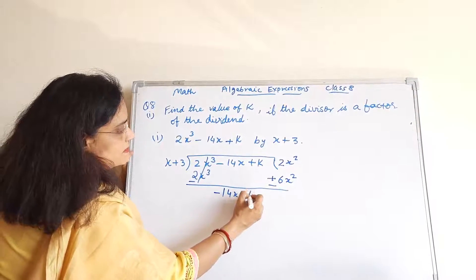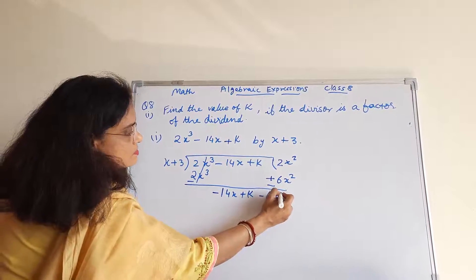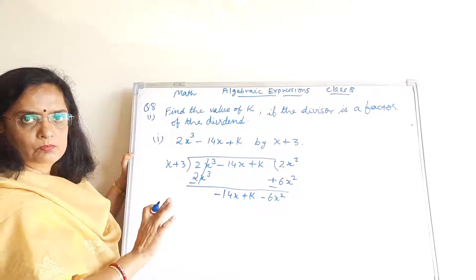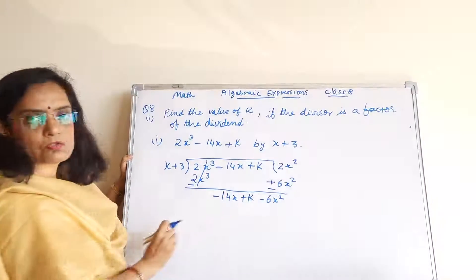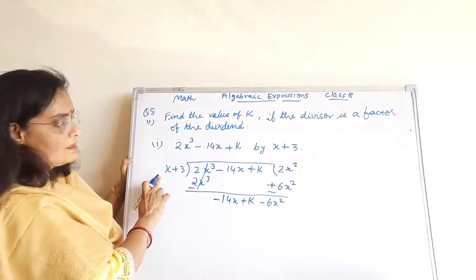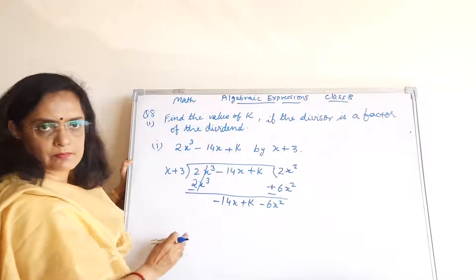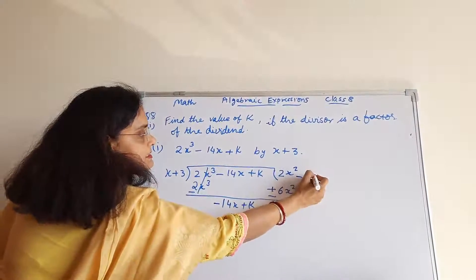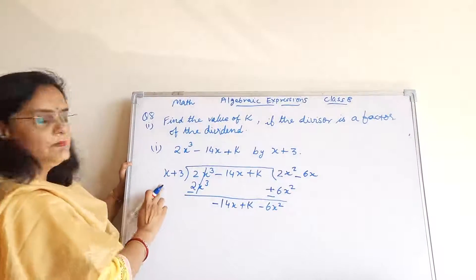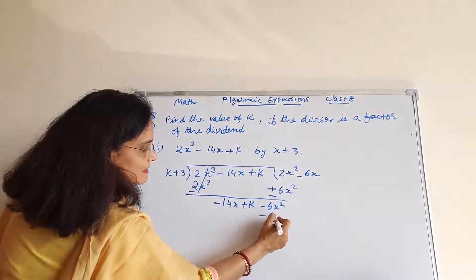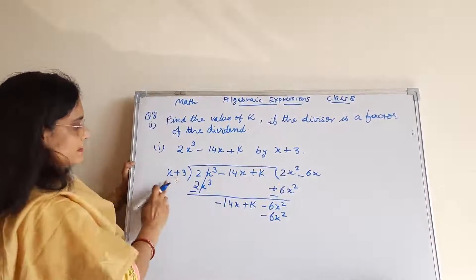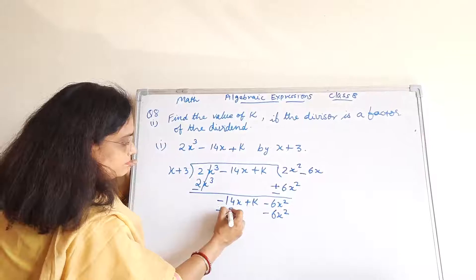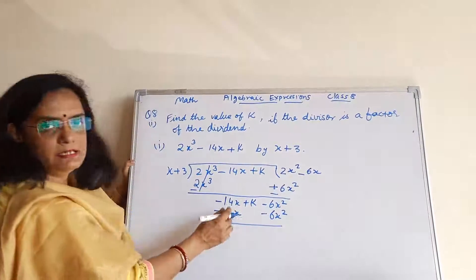Kya bacha: 14X plus K minus 6X square. Pehle X cube ko solve kiya, phir X square ko. Ab hum X square ko solve karenge — this is X and this is minus 6X square. Quotient mein minus 6X likhenge, because minus 6X multiplied by X will give us minus 6X square, and minus 6X multiplied by plus 3 gives minus 18X.